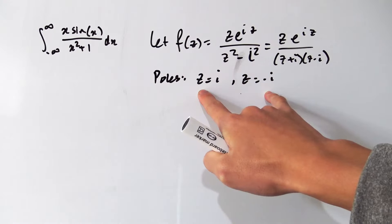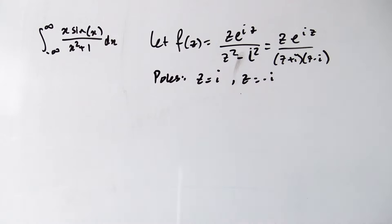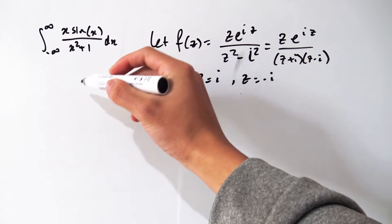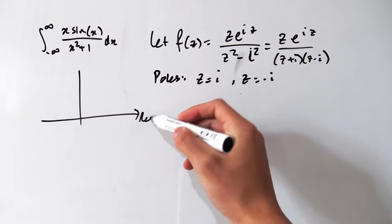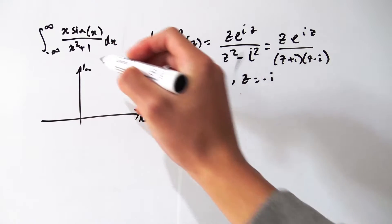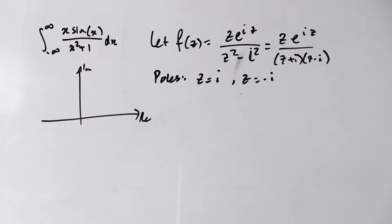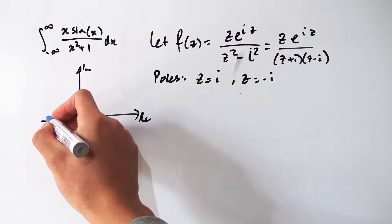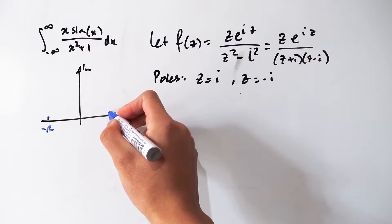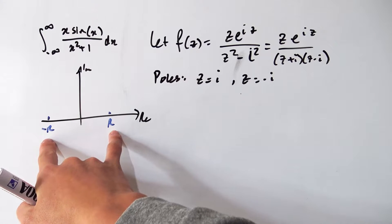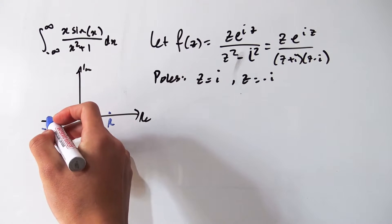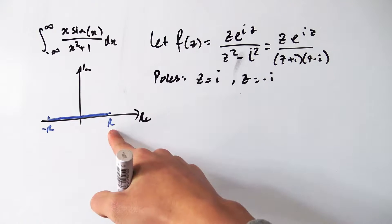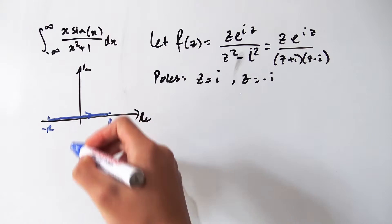We've defined our function and found the poles, so now we need to figure out our contour. For this type of integral it's nice to use the semicircle contour. In the complex plane, we choose two points −R and R on the real axis, and we'll want R to be a really big number. We start at −R and walk along the real axis to +R.